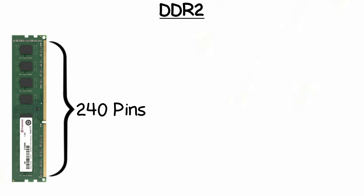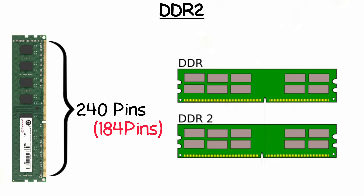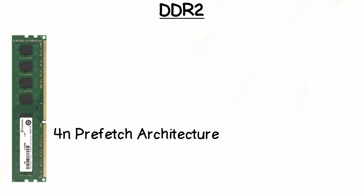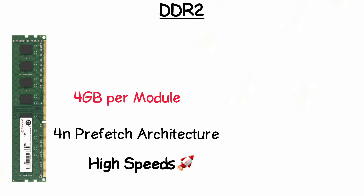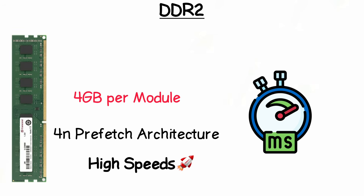DDR2 had 240 pins compared to DDR1's 184 pins and a different notch position, making it incompatible with DDR1 slots. It used a 4n prefetch buffer and maxed out at 4 gigabytes per module. Although DDR2 offered higher speeds, it had slightly higher latency than DDR1; however, the speed advantage generally outweighs this drawback.